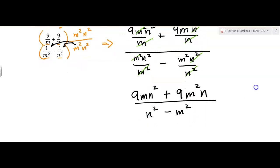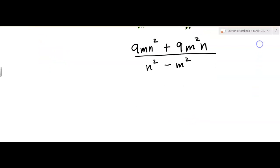Over, and then in the denominator, I have N squared minus M squared. Well, now at least it's just one rational expression. But you have to see if you can simplify this.